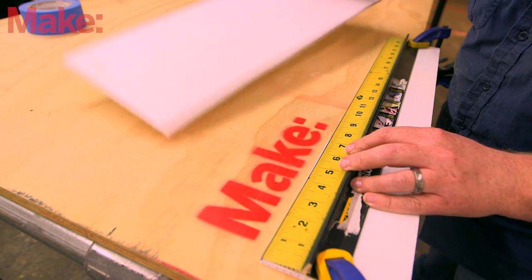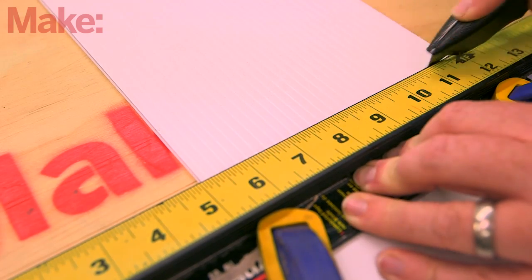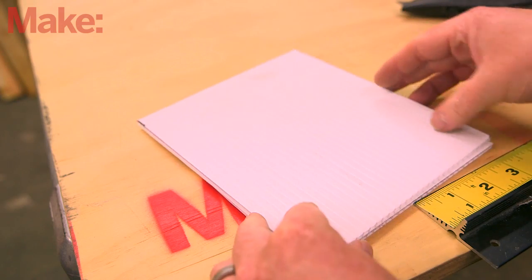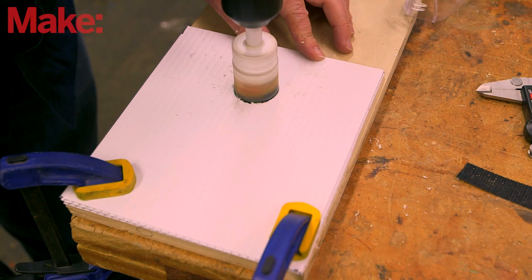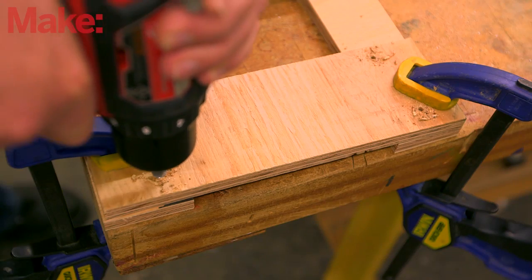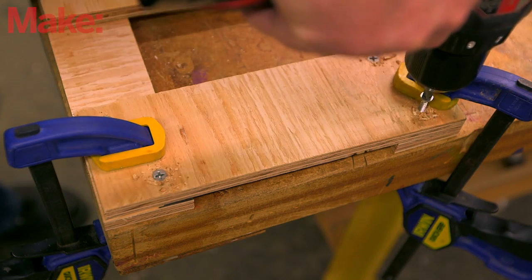We'll start by building the rig that drops the item we want to photograph into the water. Cut two sheets of corrugated plastic the same size and then cut matching holes in each of them. Then, build a simple frame to carry the two sheets.